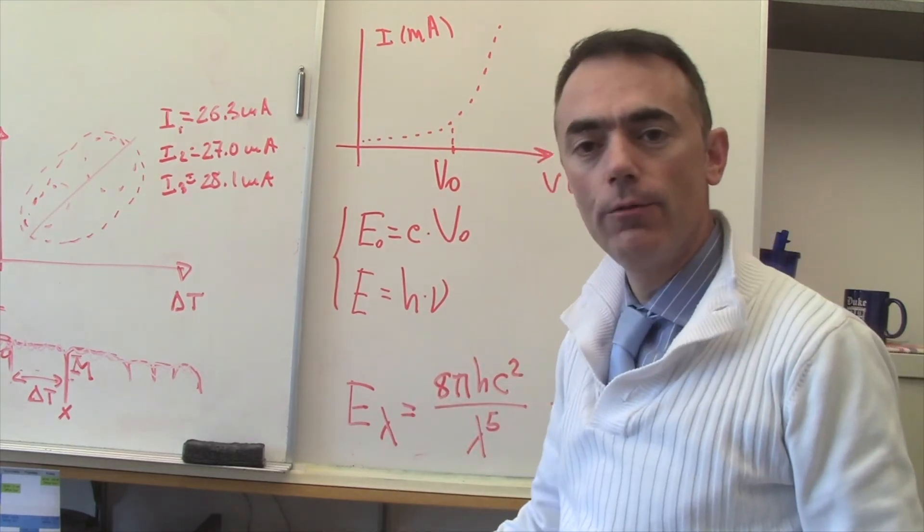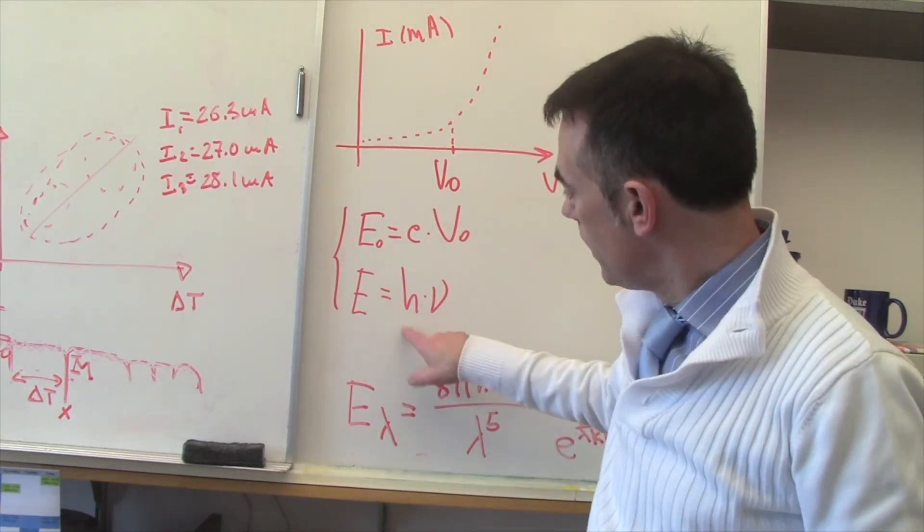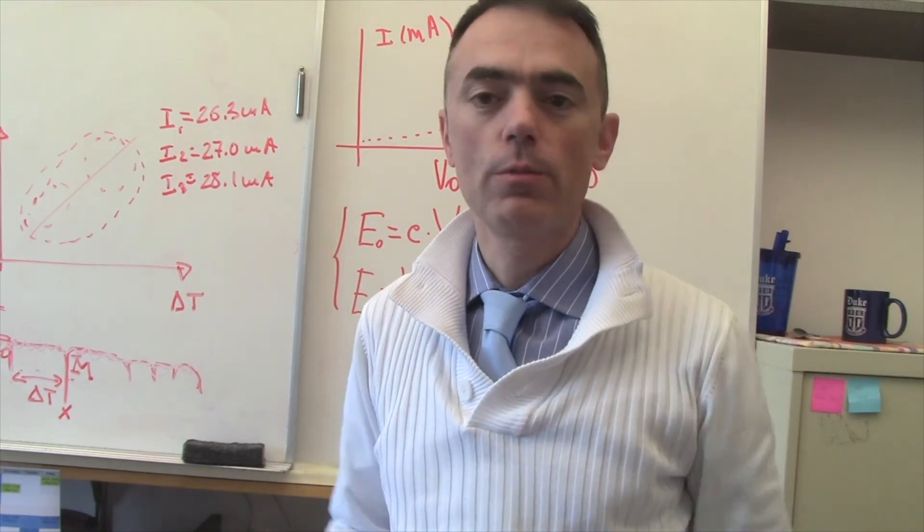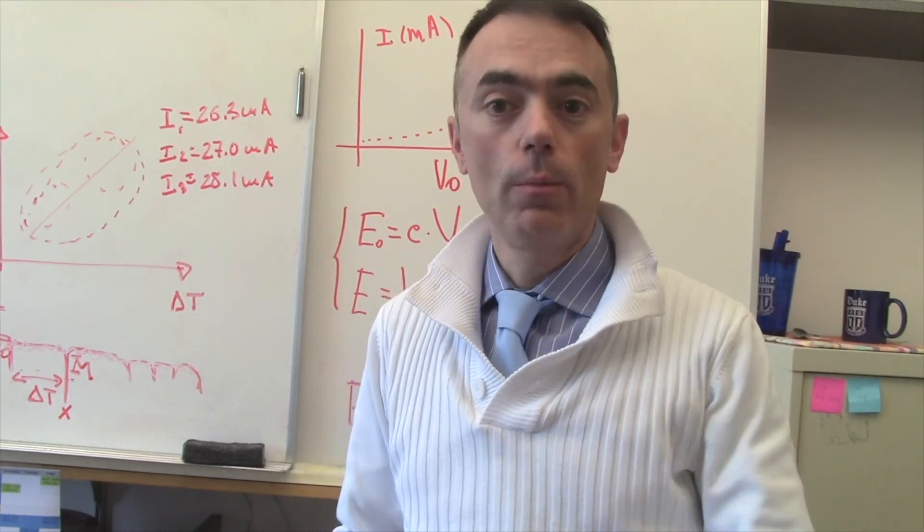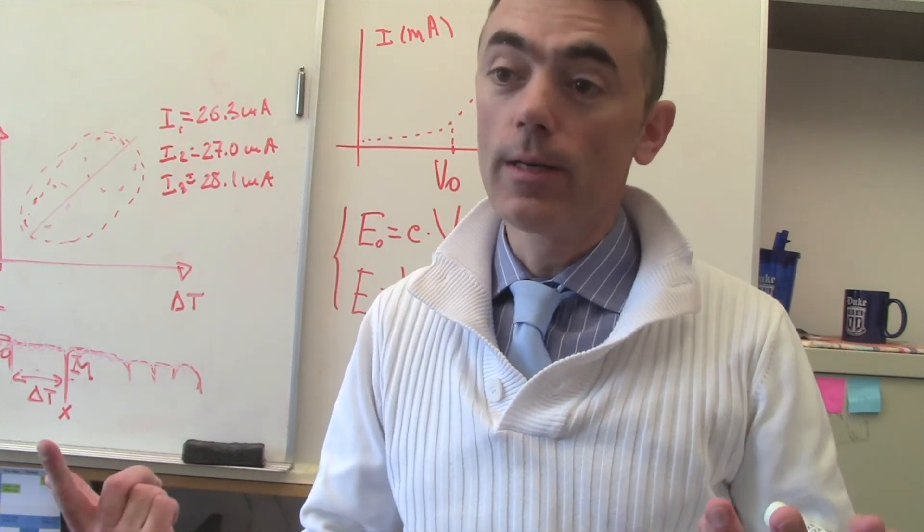You have eight different values for the eight different frequencies or wavelengths, and you should be able to find Planck's constant, of course with the corresponding error. And now if somebody asks you what's the noise that two electrons make when they collide, you can tell Planck.